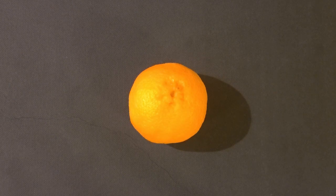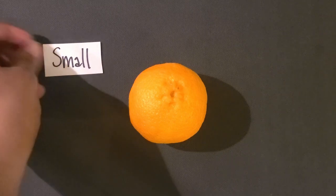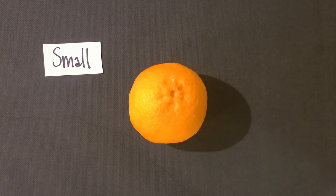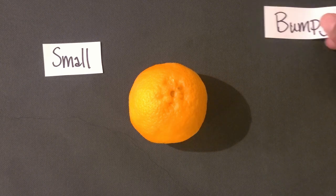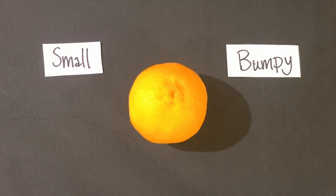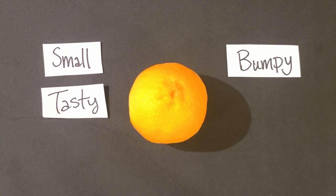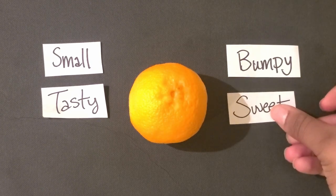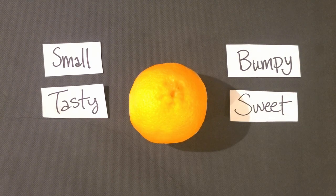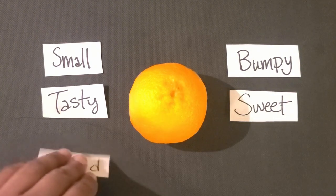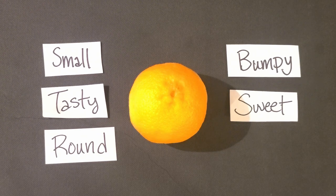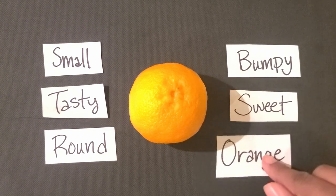You can start by saying, the orange is small. Then the child might say, the orange is bumpy. You might say, the orange is tasty. Then they might say, the orange is sweet. You might say, the orange is round. And they might even say, the orange is the color orange.